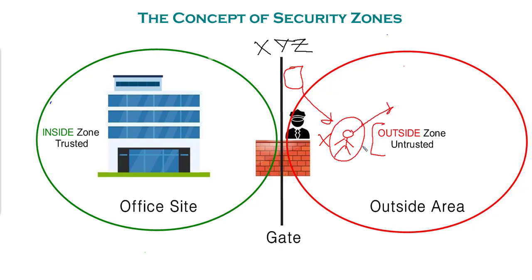Why wasn't he allowed? Because he was coming from the outside zone, which is not trusted. No one from inside gets in unless explicitly permitted. On the other hand, Charlie — an employee of XYZ — walks out to smoke and comes back in. The gatekeeper noted that Charlie walked out and expected him to return. That is the inspection feature, which we'll leave for now as we focus on security zones.